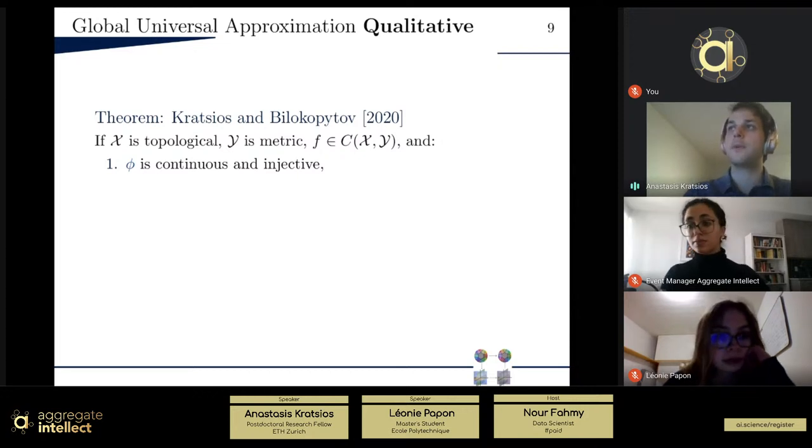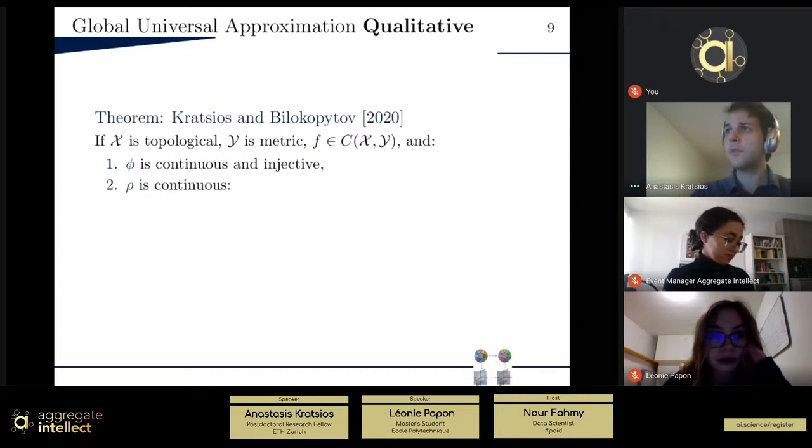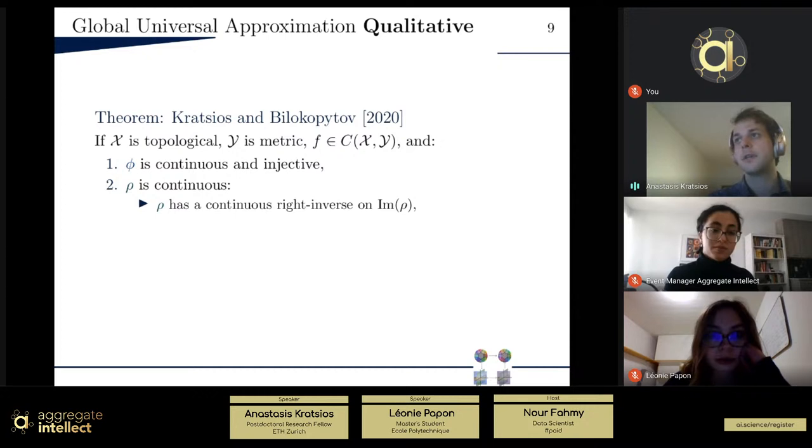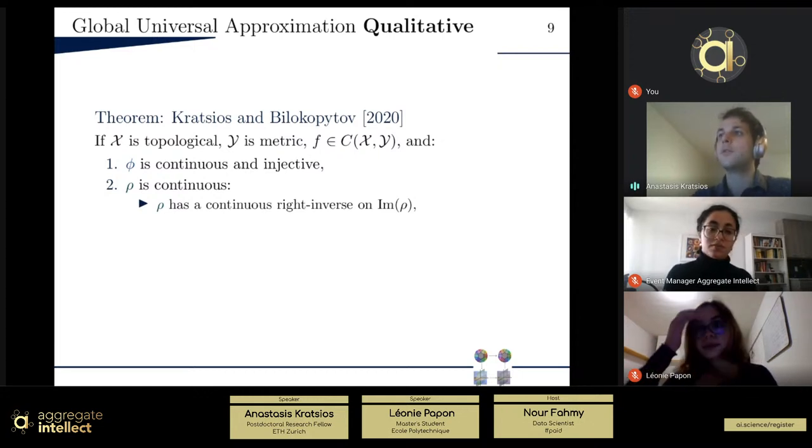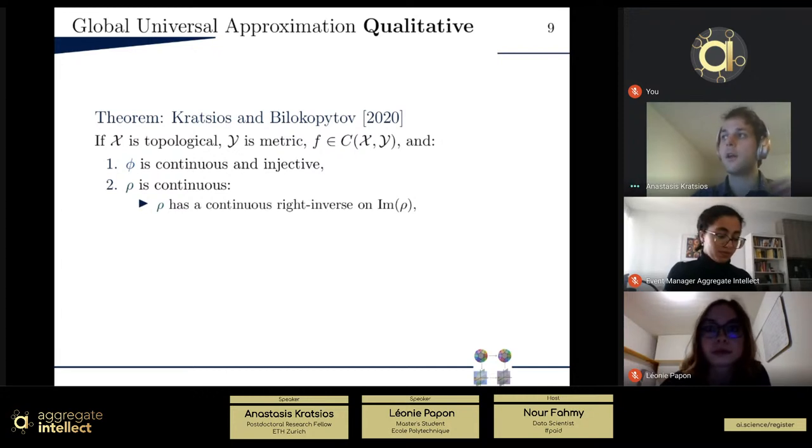Well, for the feature map, we need F to be continuous and injected. So this is strict, actually. You can show that this is necessary and sufficient. For the readout map, things are a bit more tricky, as is usually the case in these types of diagrams. So what we need, of course, is continuity. That's obvious. But then we need two more things that are less and less obvious, three more things.